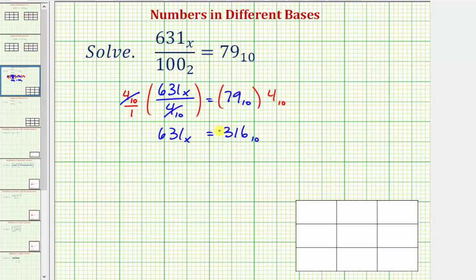So the leftmost place value is 3 here, but over here the leftmost place value is 6. So because 6 is larger than 3, this tells us the base of 631 must be less than 10 if these two numbers are going to be equal.